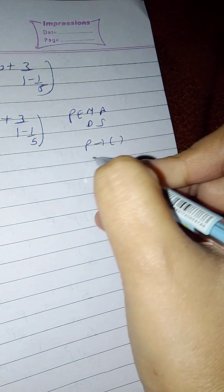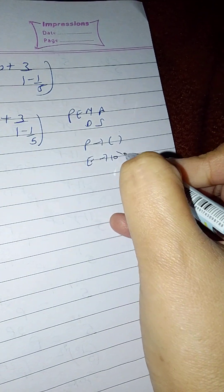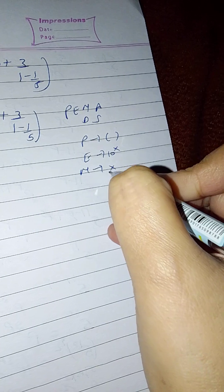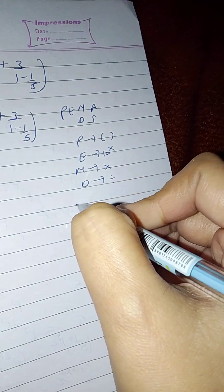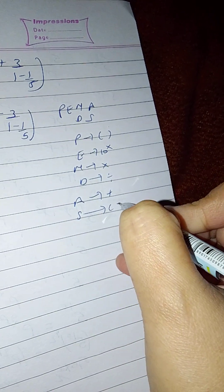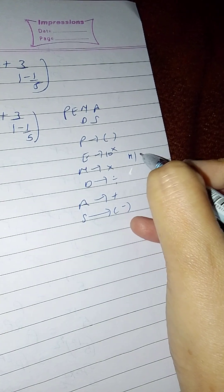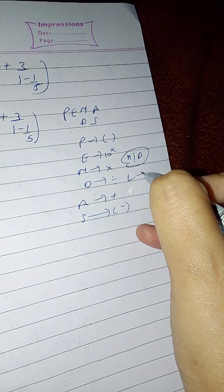First of all parentheses, then exponent, then multiplication, then division, then addition, then subtraction. But multiplication and division are of equal priority and we go left to right.